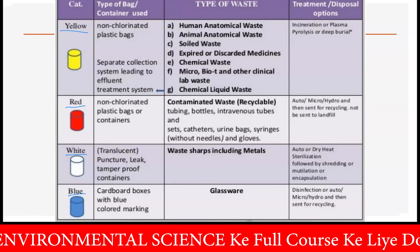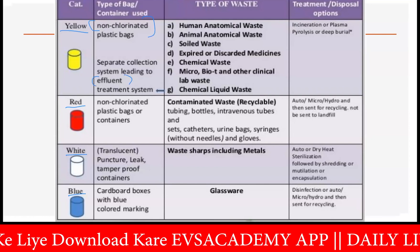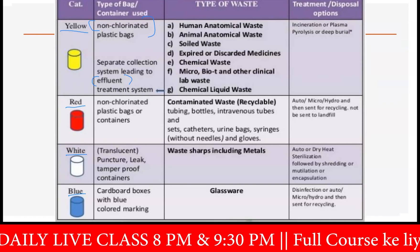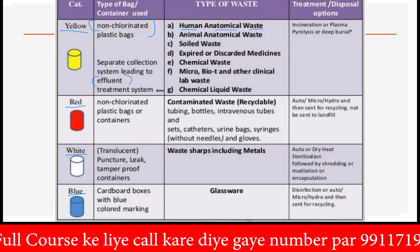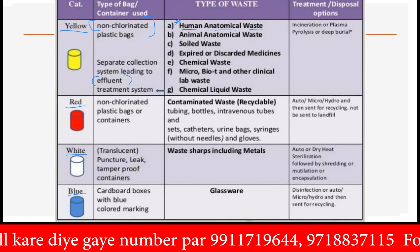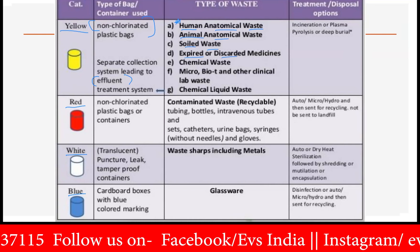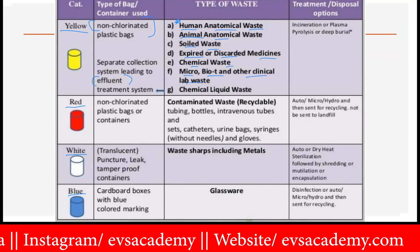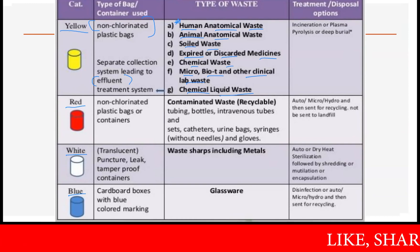In the yellow bag, these are the non-chlorinated plastic bags with a separate collection system leading to the effluent treatment system. All the human anatomical waste — this question has been asked multiple times — can be stored in the yellow bag. Animal anatomical waste, soil waste, expired or discarded medicines, chemical waste, microbiology and other clinical lab waste, and chemical liquid waste which needs effluent treatment — those all are under the yellow bag.